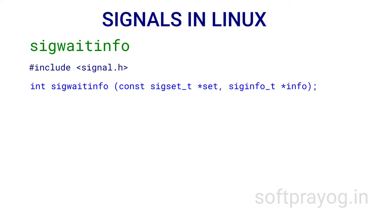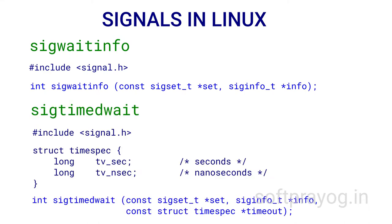The sigwaitinfo system call is an improvement on sigwait — it blocks until a signal in the set pointed by the first parameter becomes pending. Before making the sigwaitinfo call, the signals in the set are blocked by the process. Unlike sigwait, sigwaitinfo has a parameter pointing to a siginfo_t structure which has more details about the signal. Once a signal becomes pending, sigwaitinfo accepts it and returns the signal ID. sigtimedwait is sigwaitinfo plus a timeout — if no signal is pending and timeout occurs, sigtimedwait returns -1 and errno is set to EAGAIN.